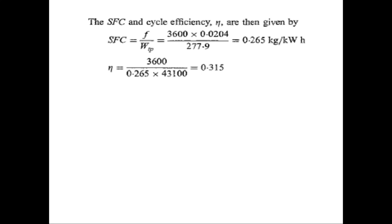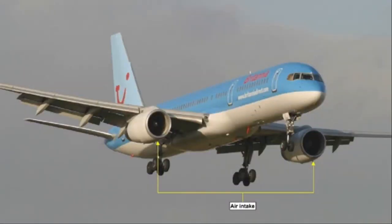The specific fuel consumption is 3600 times the actual fuel-air ratio divided by the specific work output: 3600 times 0.0204 divided by 278 = 0.265 kg/kWh. This means that to produce one kilowatt-hour of energy, roughly 0.265 kg of fuel is consumed. The thermal efficiency equals 3600 divided by (SFC times 43100) = 31.5 percent.